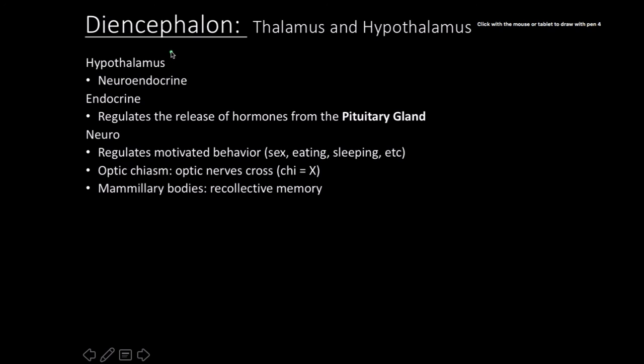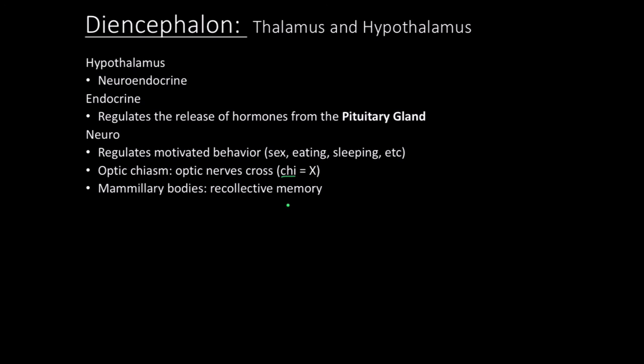The hypothalamus we'll talk more about in the endocrine lectures, but know that it's a neuroendocrine structure — it has roles in both the nervous system and the endocrine system. It works closely with the pituitary gland and the pineal gland. Neurologically, it plays a role in regulating motivated behavior: sex, eating, sleeping, and also serves as a relay point for the optic nerves, which cross at the optic chiasm — 'chiasm' meaning X in Greek.